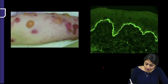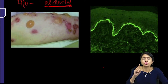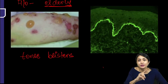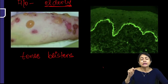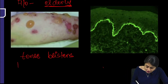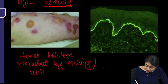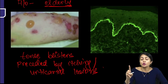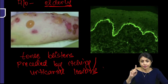Usually an elderly female or male, 60 years old, presenting with tense blisters. If they want you to differentiate between sub-epidermal and intra-epidermal disorder, they will either mention flaccid or tense blister, or give you histopathology or a DIF. They will give you history of tense blisters, or lesions preceded by itching or urticarial lesions. Bullous pemphigoid — tense blisters, preceded by itching or urticarial lesions, elderly female or male.